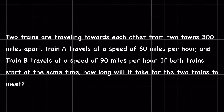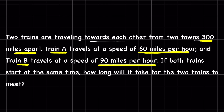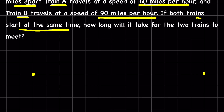Two trains are traveling towards each other from two towns 300 miles apart. Train A travels at a speed of 60 miles per hour and Train B travels at a speed of 90 miles per hour. If both trains start at the same time, how long will it take for the two trains to meet?